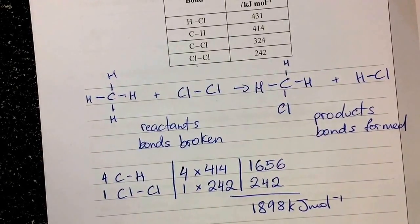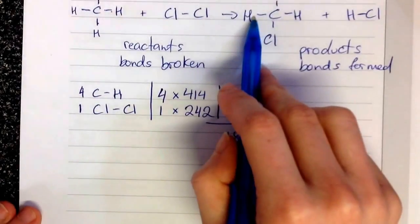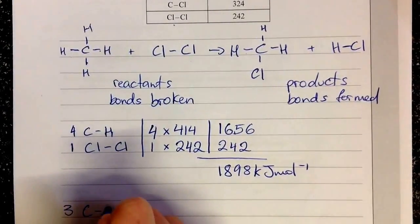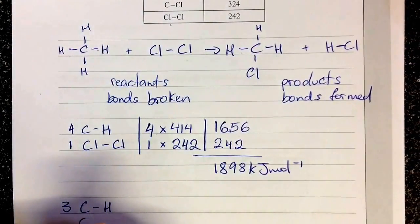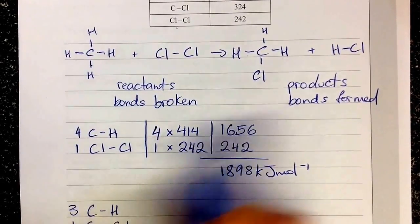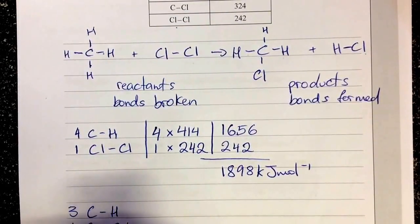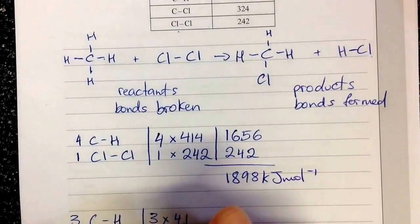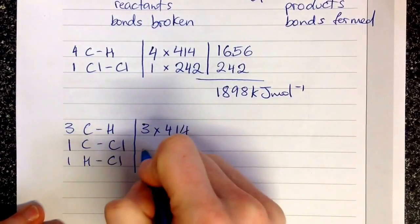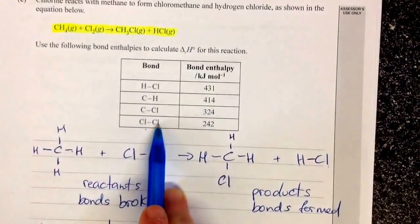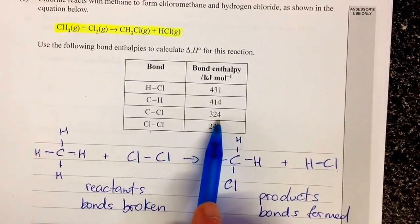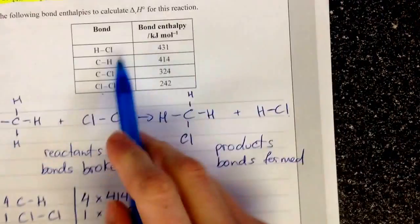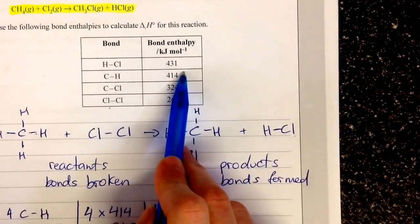We then need to do the bonds being formed. So we have three carbon to hydrogen bonds. We have one carbon to chlorine bond. And we have one hydrogen to chlorine bond. So 3 times 414. 1 times carbon to chlorine up here is 324. And hydrogen to chlorine up here is 431.